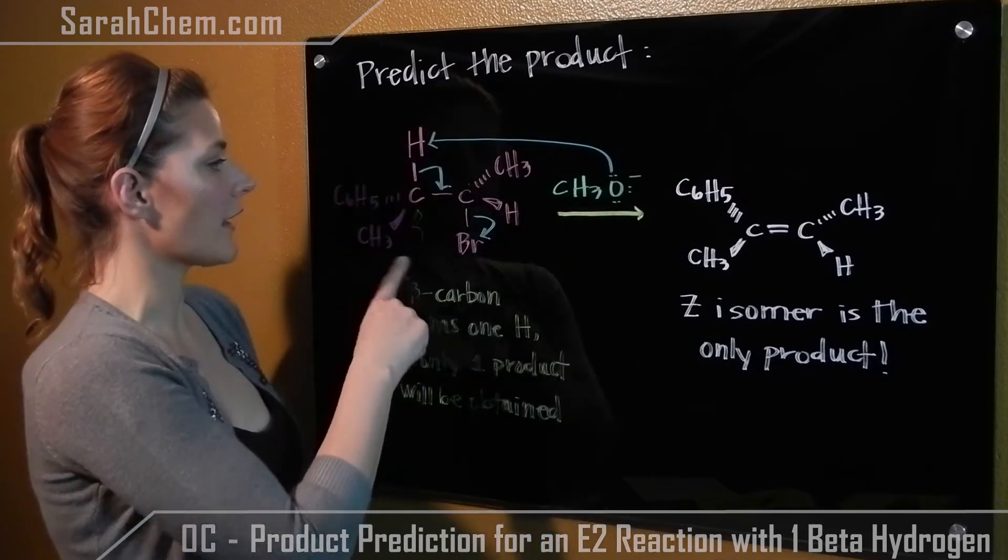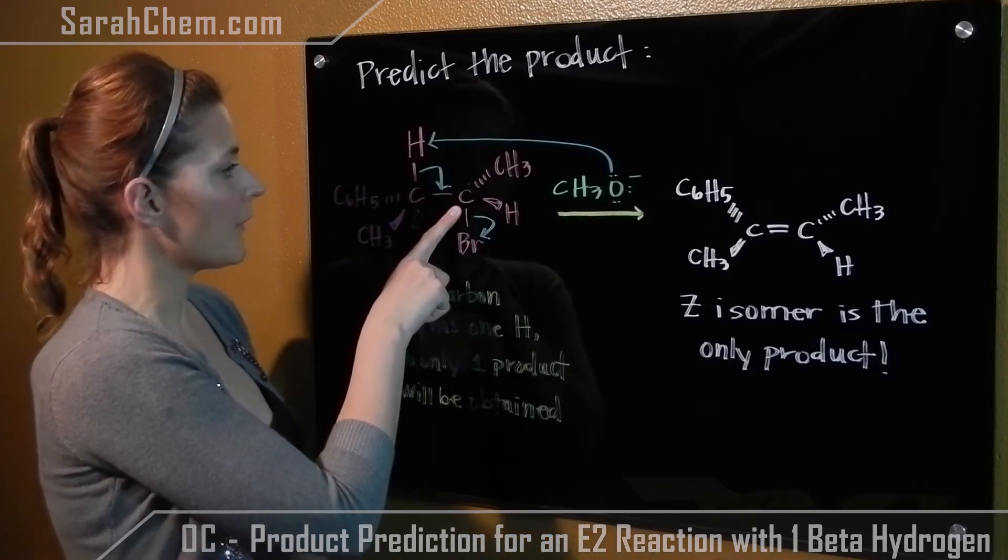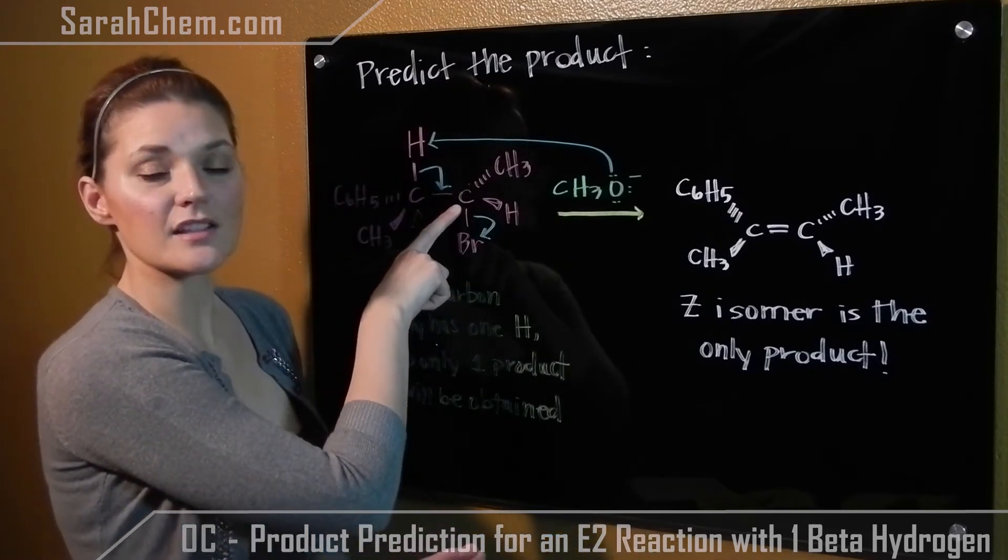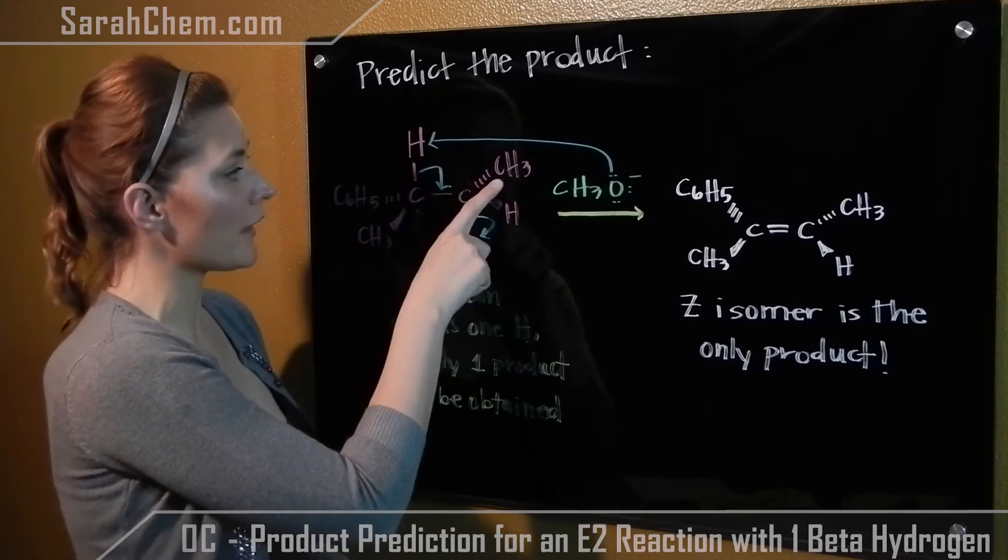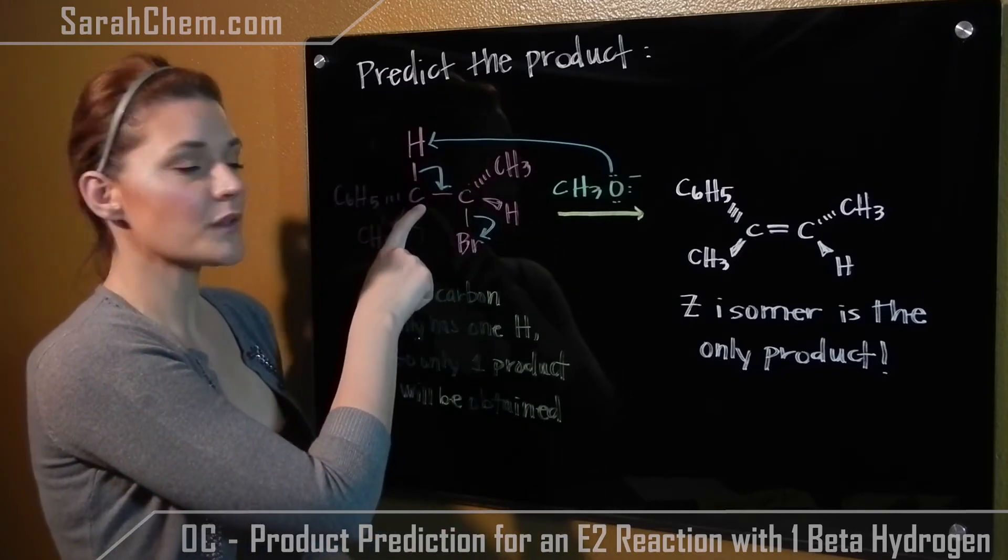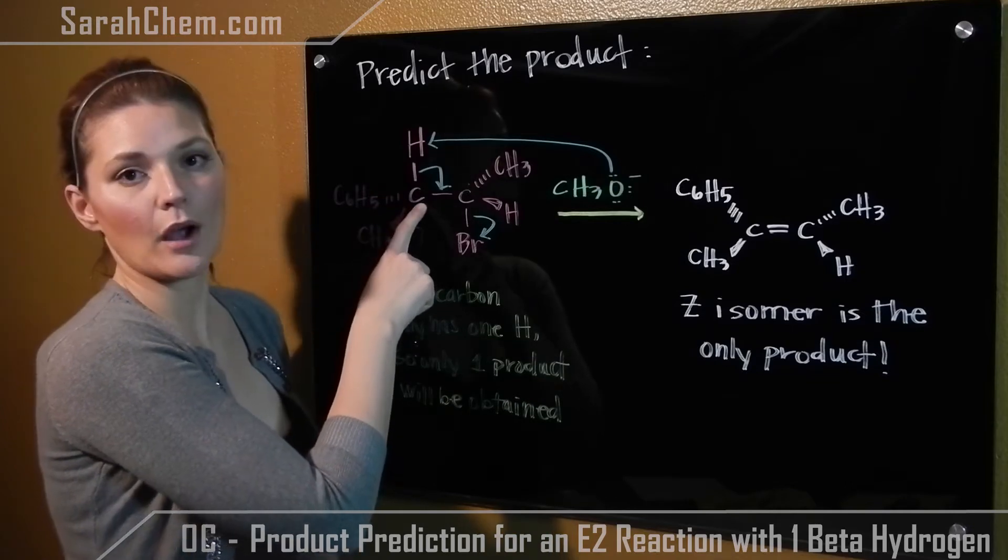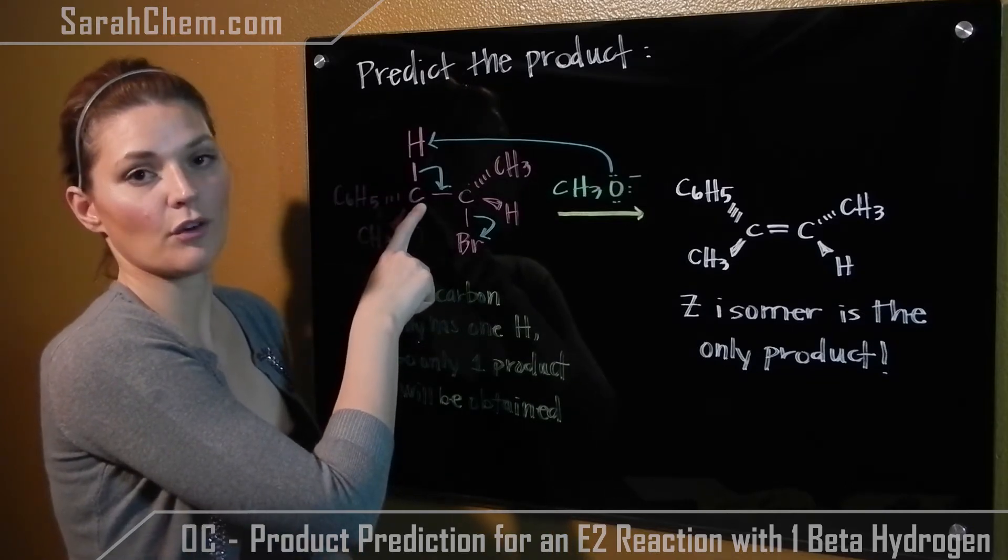So if we take a look at this alkyl halide here, there's our alpha carbon. Now this alpha carbon does have two betas, this beta carbon and this beta carbon. But due to regioselectivity, this is the beta carbon that we're going to use in order to form the alkene.